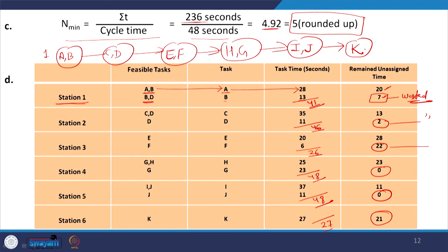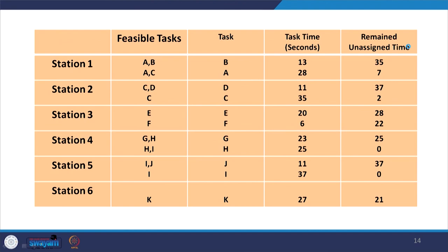With 6 stations, we can calculate the efficiency. The theoretical number of workstations was 4.92 and the actual number of workstations is 6, giving us the efficiency of the total system's line balancing. This is certainly less than 100%, even with our best efforts at balancing the line. Similarly, using another rule based on how many tasks follow a particular task, we can develop the same kind of arrangement — and even in that case, 6 workstations are needed, giving the same efficiency. Parts D and E demonstrate how different decision rules can be used for development of balanced lines.